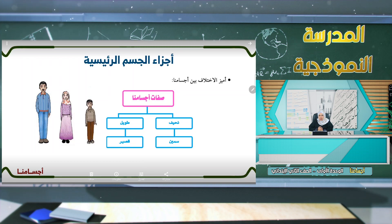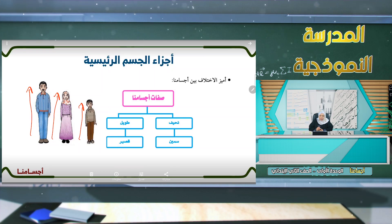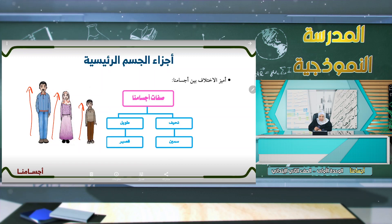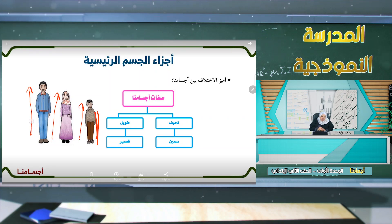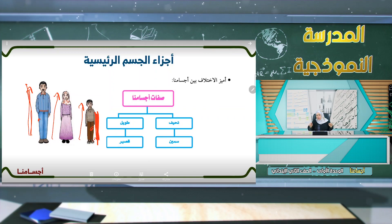هناك اختلاف في أجسامنا من حيث الطول: فهذا طويل وهذا متوسط وهذا قصير. وهناك اختلاف من حيث الحجم: فهناك نحيف وسمين. صفات أجسامنا من ناحية الوزن: نحيف وسمين، ومن ناحية الطول: طويل وقصير.